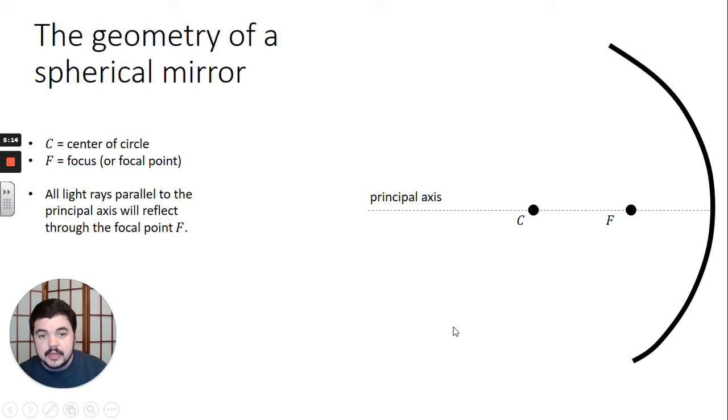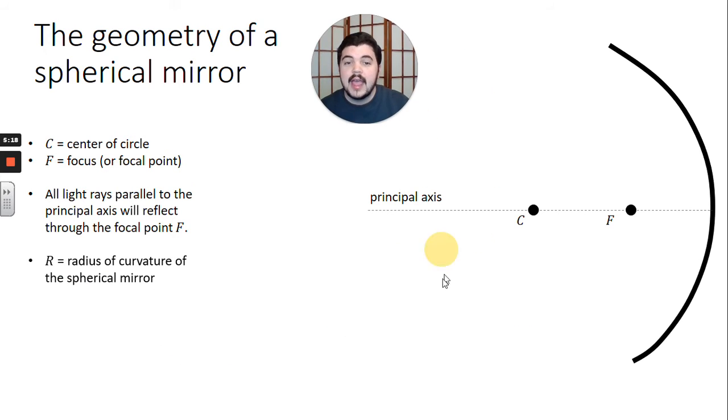Getting rid of a little bit more of that geometry now so we can look at just the details here. Capital R is the radius of curvature of our spherical mirror. So the distance from the center of that sphere out, that's the radius, the radial distance.